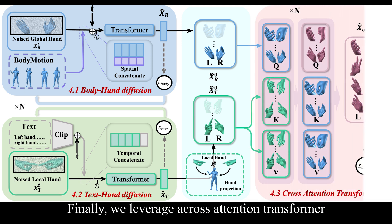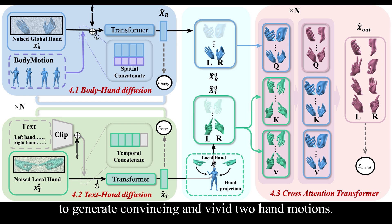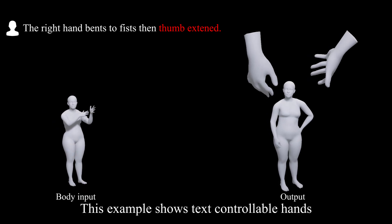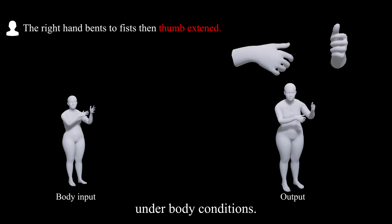We present more results under our BOTH Two Hands algorithm. This example shows text-controllable hands under body conditions.